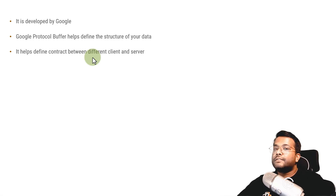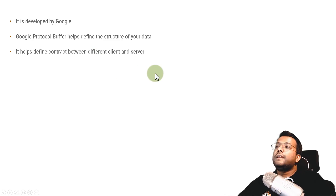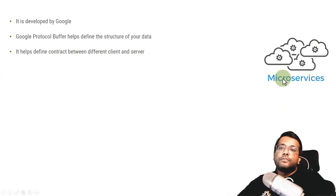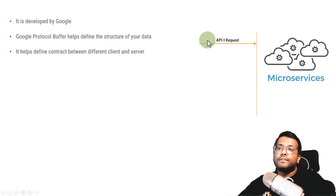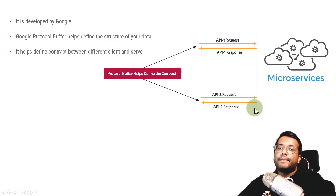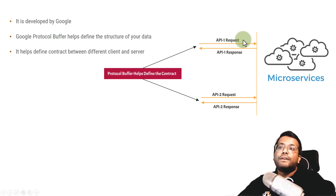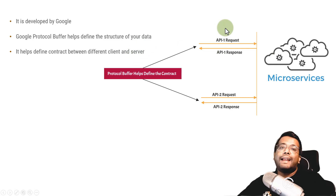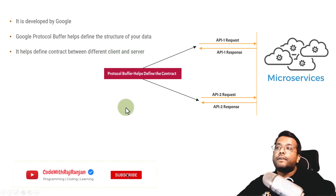Whenever you design an application, it is always client and server based. There is a server and there is a client. The client calls the server and the server responds to the API call or request. So it helps to define a contract between client and server. Let's say there is a microservice — it can be a learning management system, a payment system, anything — and this microservice exposes some APIs. There will be an API 1 request and API 1 response, and same way API 2 request and API 2 response. Google Protocol Buffer helps you define that contract, and all clients need to adhere to it so that everything works seamlessly.